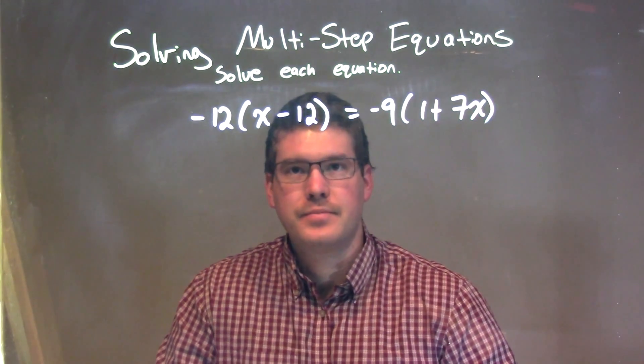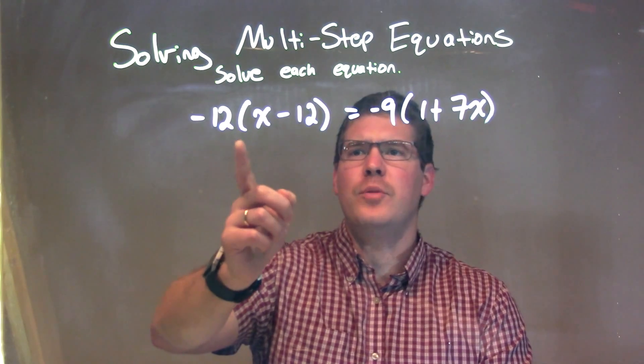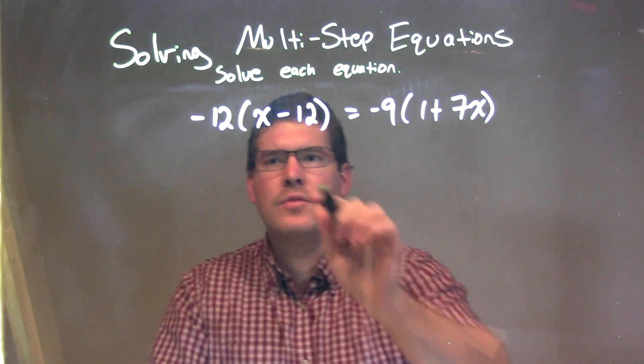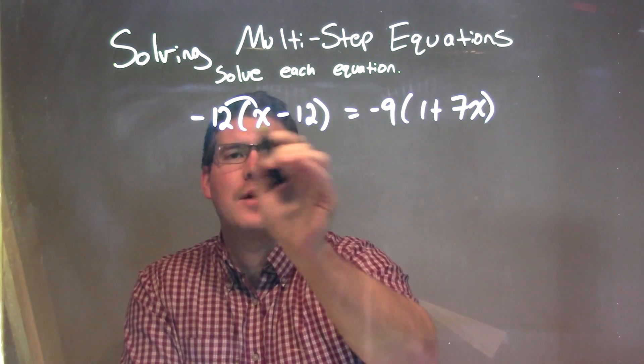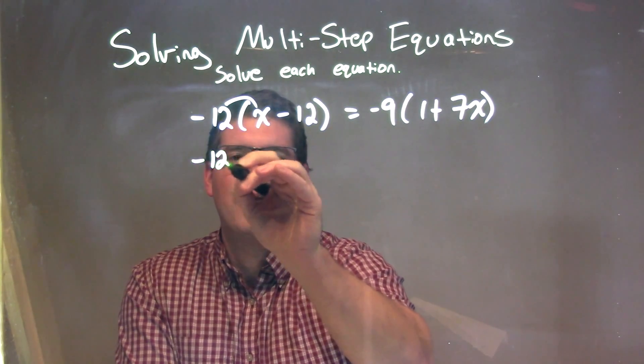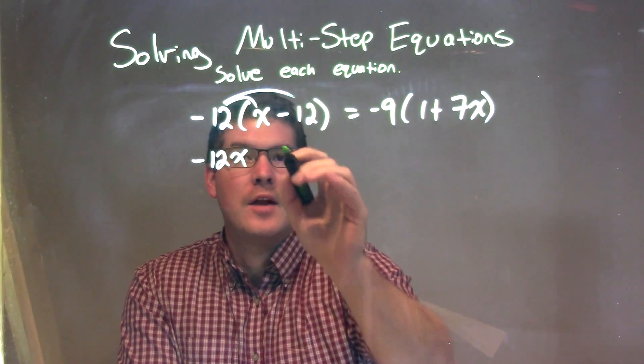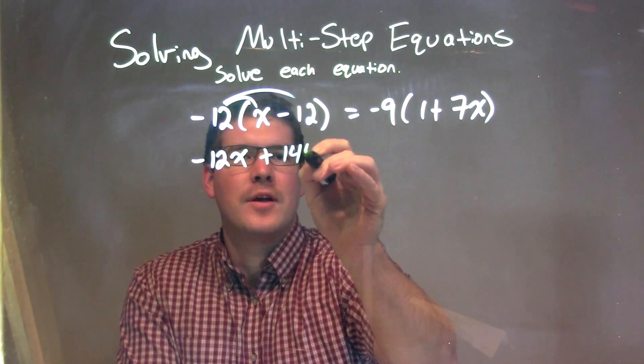Now what I want to do is I'm going to distribute, simplify each side of the equal sign. I'm going to distribute the negative 12 across. Negative 12 times x is negative 12x. Negative 12 times negative 12 is a positive 144.